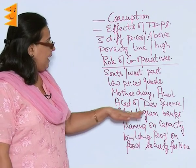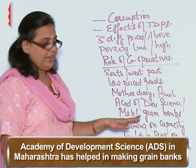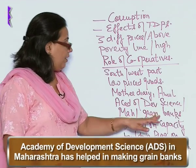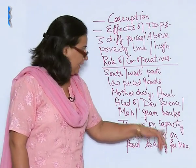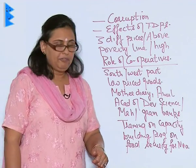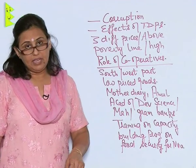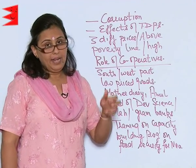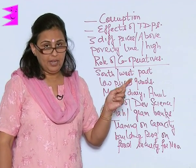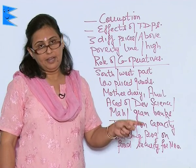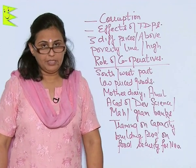The Academy of Development Science has been developed in Maharashtra, which has helped in making grain banks in various parts of Maharashtra. It gives training on capacity building programs on food security for various NGOs. This Academy of Development Science is a very efficient cooperative that has helped in storing food grains in India. This was about the chapter Food Security in India.